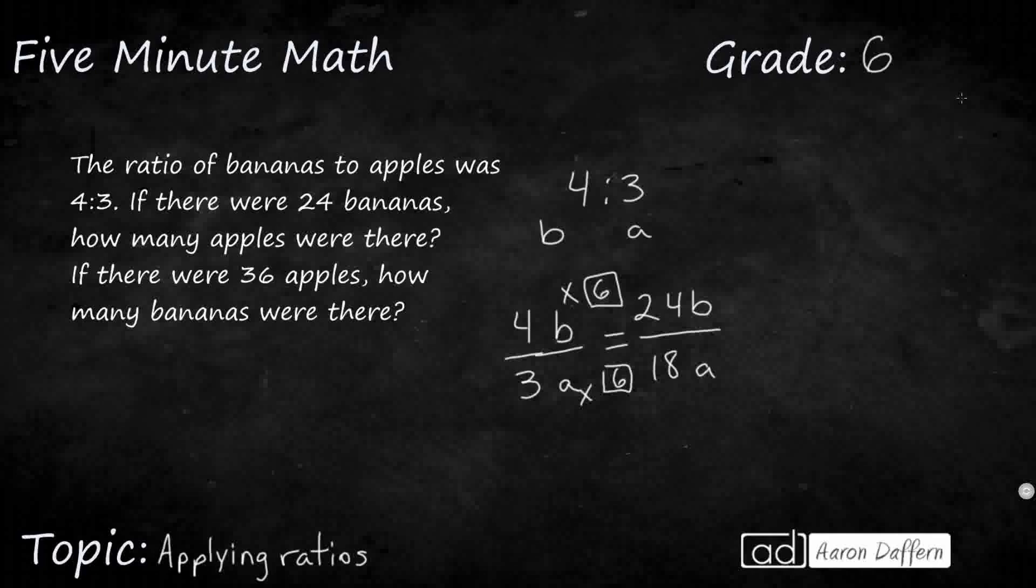If there are 24 apples, there would be, or 24 bananas, there'd be 18 apples. But what if we did the same thing, 4 to 3, and they gave us some different numbers. They said there were 36 apples. Well, let's do the same thing.